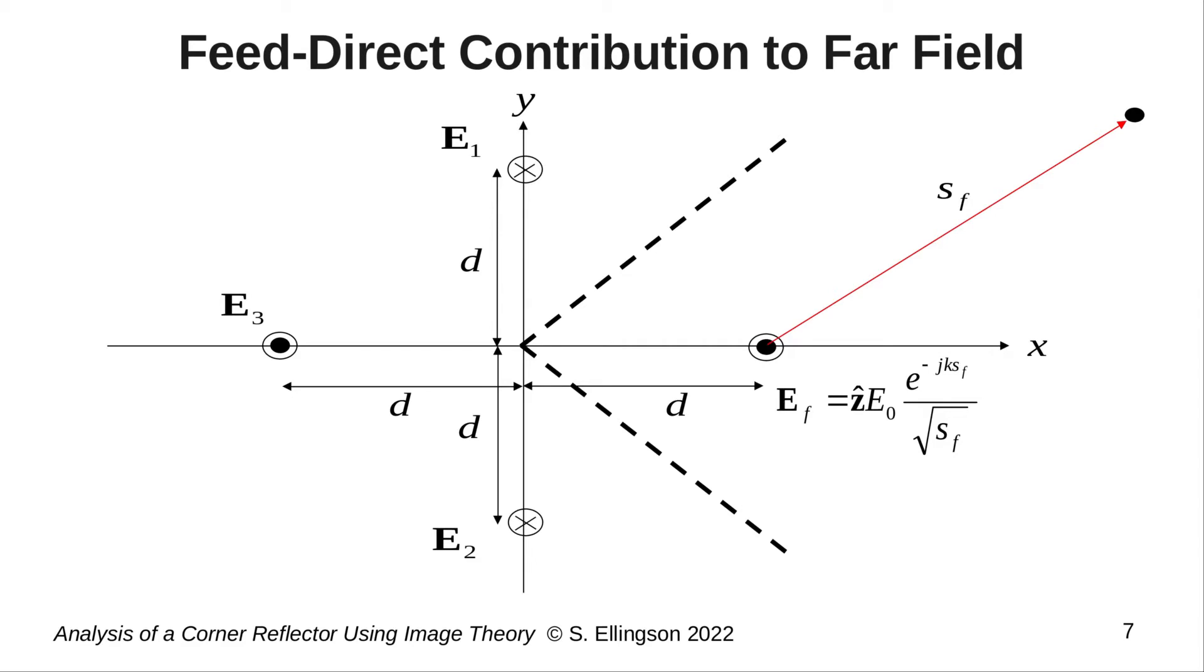Okay, so now let's label the contributions to the far field from each one of these line sources. We have E sub f from the feed, and then E sub 1, E sub 2, and E sub 3 for the new line sources above, below, and behind the vertex respectively.